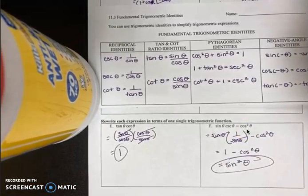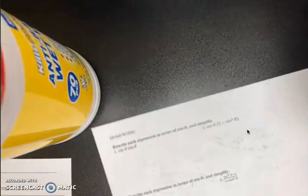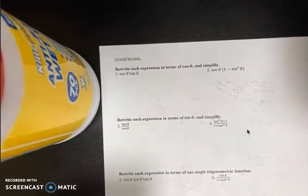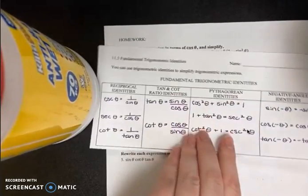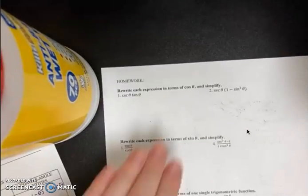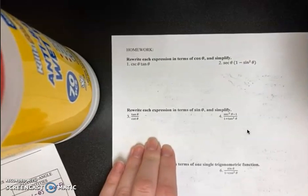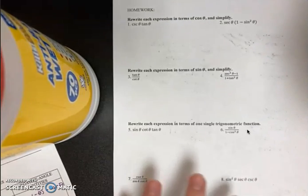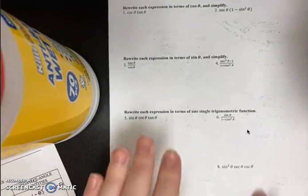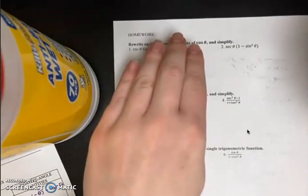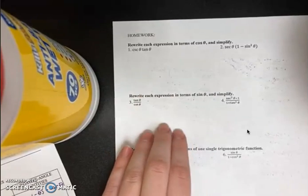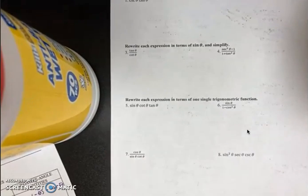I know this might seem a little confusing because I went through it pretty quickly — this is a video for my remote learners. I'm hoping this is helpful enough for you to start the homework. Make sure you have these identities written out and use them: rewrite in terms of cosine for problems 1 and 2, rewrite in terms of sine for 3 and 4, and rewrite as a monomial for 5 through 8. Use the first example for the first section, the second example for the second section, and the third example for the last section.